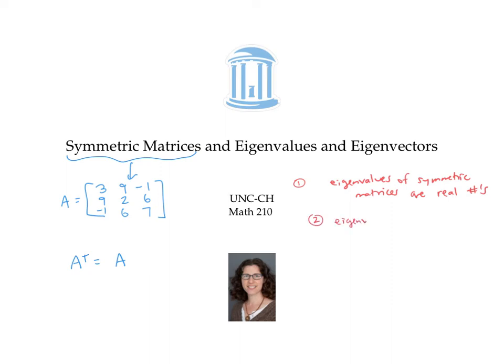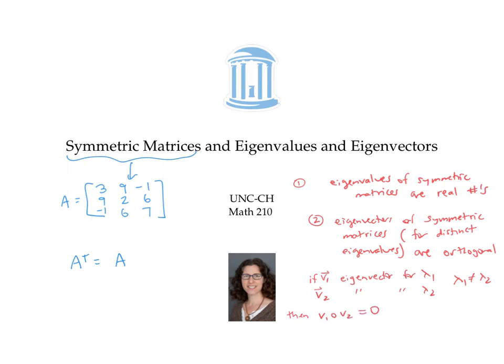The eigenvectors of symmetric matrices for distinct eigenvalues are always orthogonal. In other words, if V one is the eigenvector for eigenvalue lambda one, and V two is the eigenvector for eigenvalue lambda two, and lambda one is not equal to lambda two, then V one dotted with V two is zero. I'll show you the proofs of these facts in a different video.